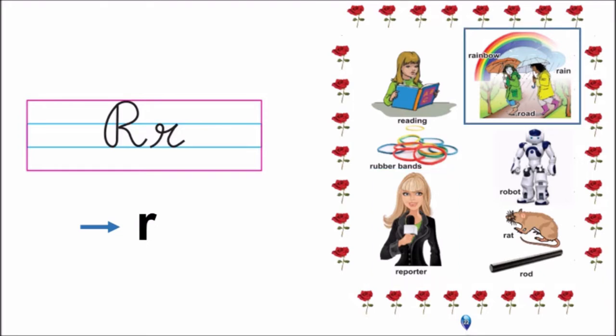Now let us look at the next picture. Here we have three things: R, R, rainbow. Say with me: R, R, rainbow. R, R, road. R, R, rain. And look what are the girls wearing? Yes, they are wearing...